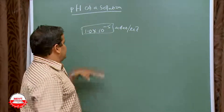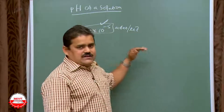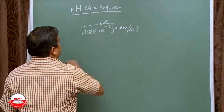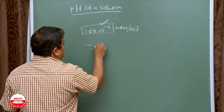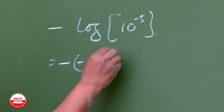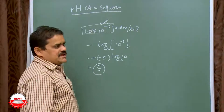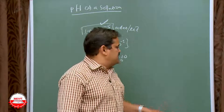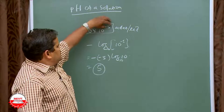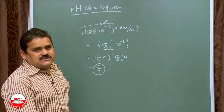Since logarithm is not in the CBSE syllabus, these calculations are not required, but you should know how to find the pH. For 1.0 × 10⁻⁵, taking the negative logarithm gives minus of minus 5, which equals plus 5. There are two types of logarithm — natural and Napierian — but normally if the base is not given, it is taken as 10. Simply observe the exponent of 10: for 10⁻⁵, the pH is 5.